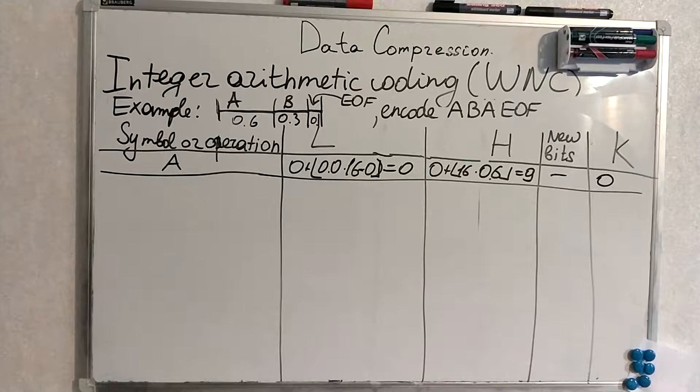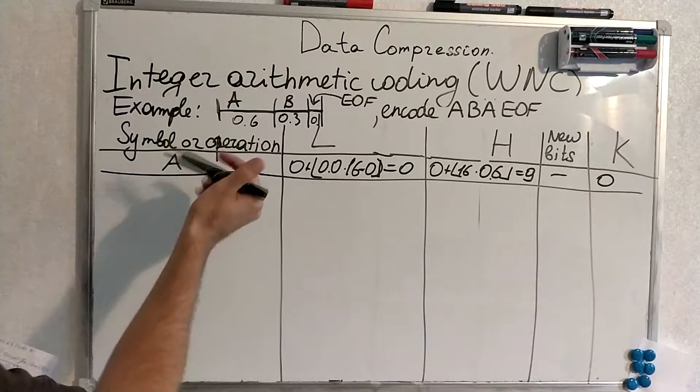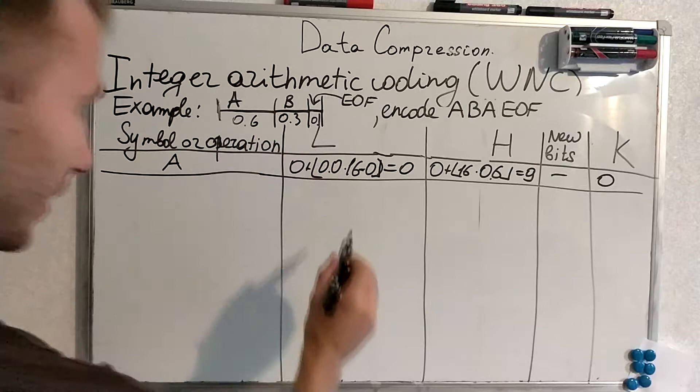Lower interval is determined by previous lower interval plus symbols up to symbol we are encoding. No symbols have been seen up to A because it's the first symbol in our ordering. Thus we produce this interval for now.